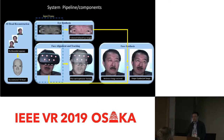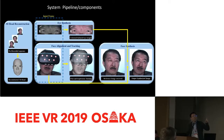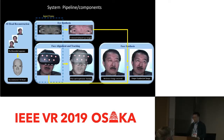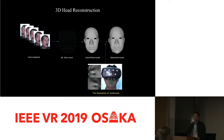This is our system pipeline. We start with the reconstruction of a personalized, animatable 3D face. With that face model, our goal is that from input frames — including two infrared images from inside the HMD and the input frame from the color camera — we want to be able to synthesize a facial image with the head-mounted display removed. I'll talk through those components step by step.